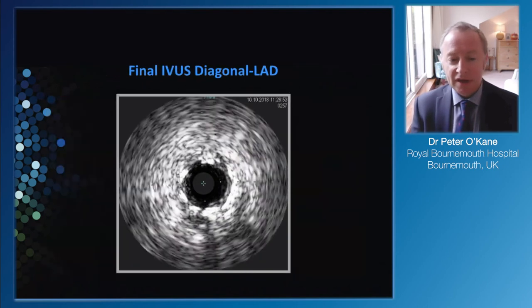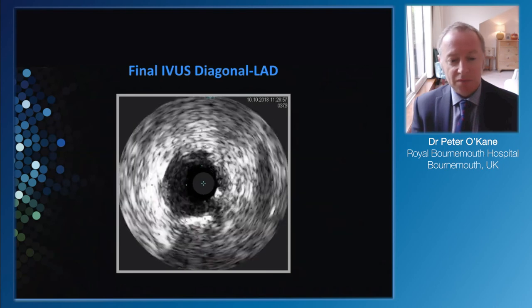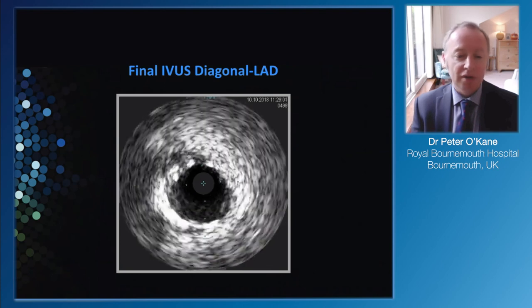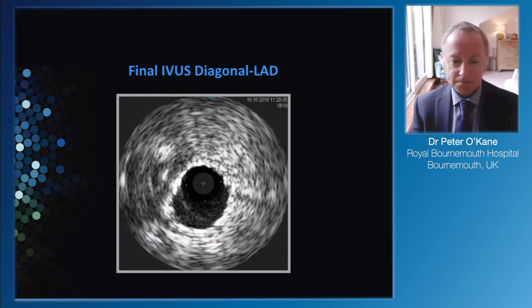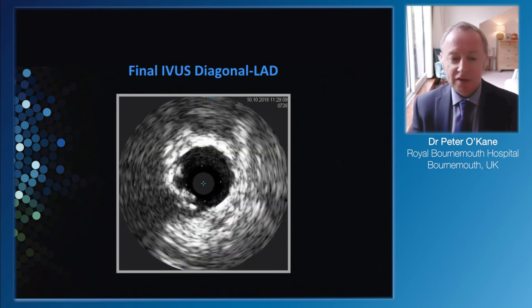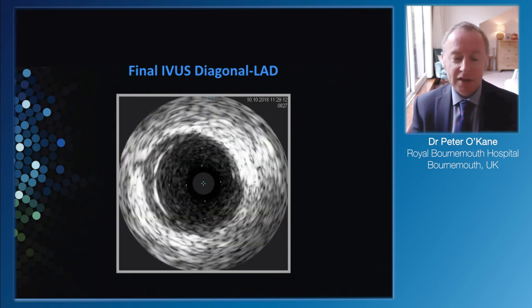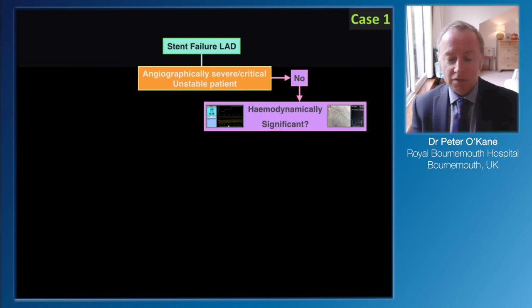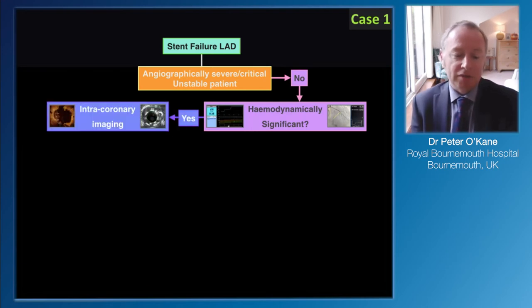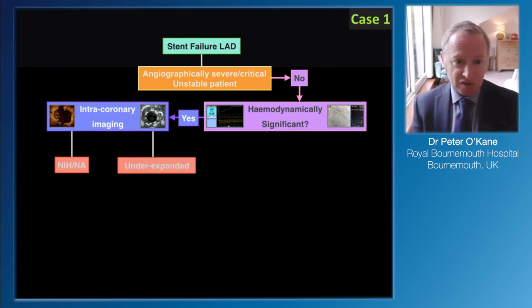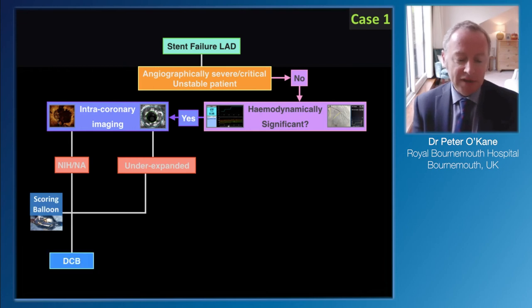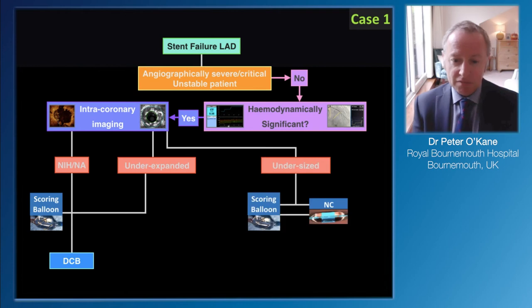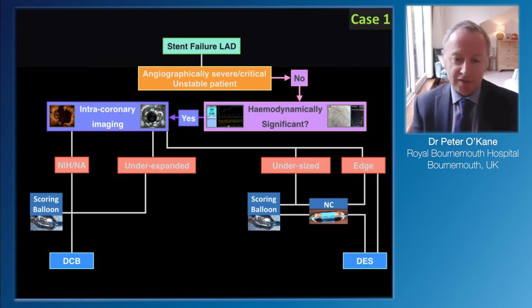We checked the IFR and managed to resolve that gradient, getting a value around 0.89 to 0.90. The IVUS shows reasonably good expansion of the previous stent and of the newly implanted stent - using the tools to try and optimise the case as best we can. Taking that case through the algorithm: we started with stent failure in the LAD, which was long-standing. It wasn't critical, so we used haemodynamics to understand whether it was important. We moved to intracoronary imaging - discovered neointimal hyperplasia, found an under-expanded stent, used a scoring balloon and drug-coated balloon in the mid-vessel. We found some undersizing, non-compliant balloon for the edge problem at the ostium, and treated that with a new drug-eluting stent for the final result.